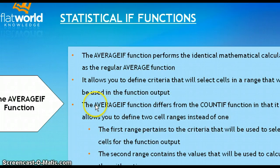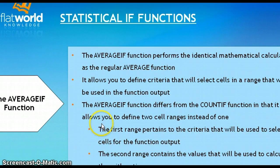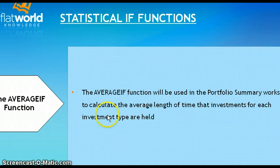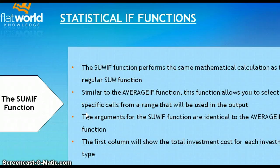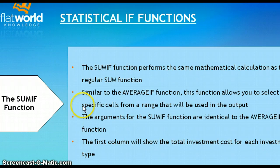AVERAGEIF works the same way — it performs averaging over a range based on what you provide, and you can use it to select cells once the condition is determined. The SUMIF function is also similar: it's a mathematical sum function that uses a range of cells to collect information and adds them together, as opposed to averaging them or finding the statistical mean of those items. These functions work very closely together and we will be working with each one in our spreadsheet.